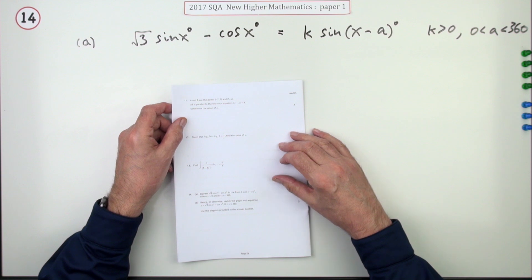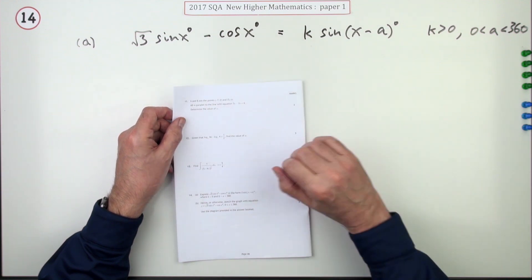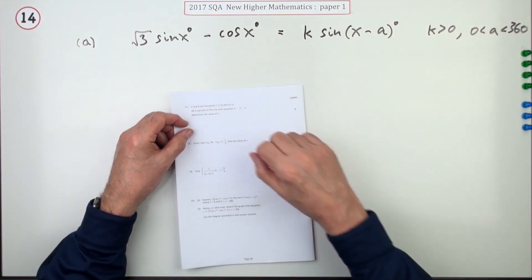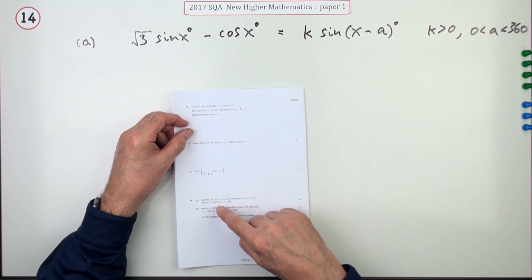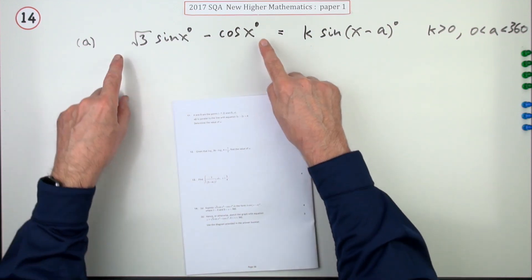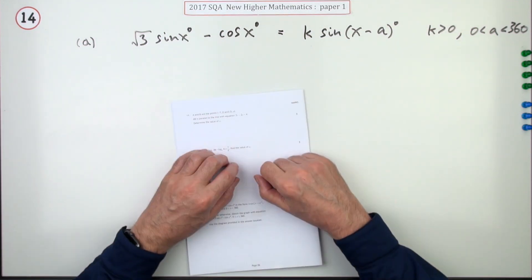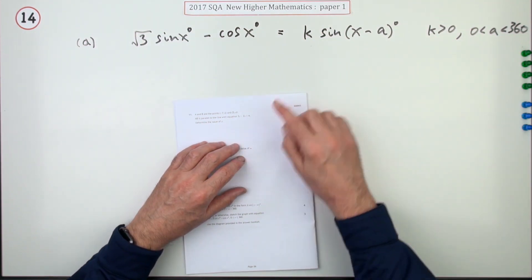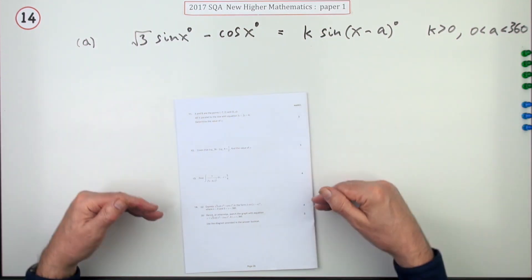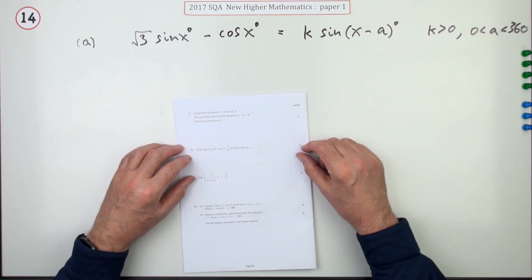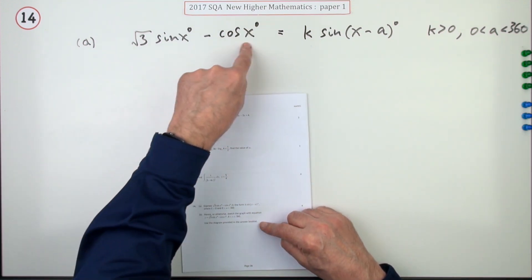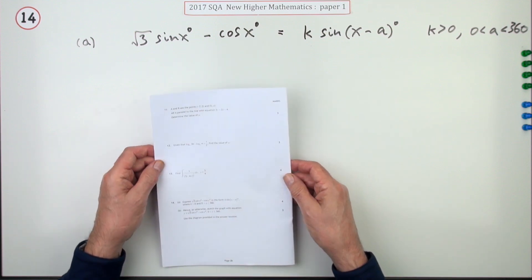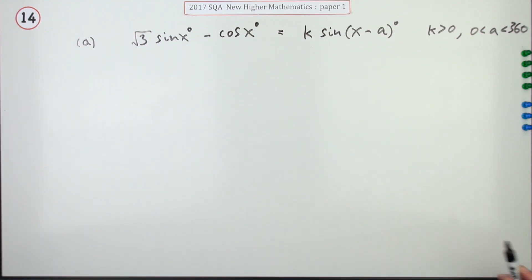Question 14 from Paper 1 of the 2017 New Higher Maths — seven marks for the wave equation. The usual two parts: Part A, express this expression involving two separate trig terms as a single trigonometrical term, a single wave. Part B, sketch the graph of the result. Four marks for the first part.